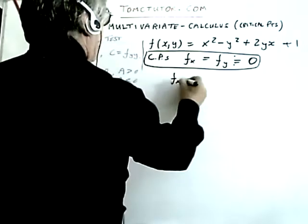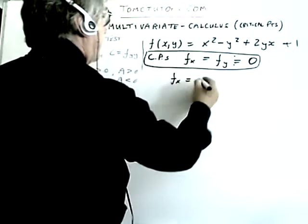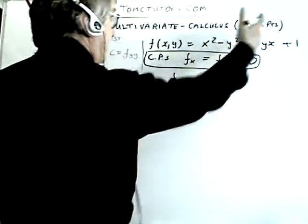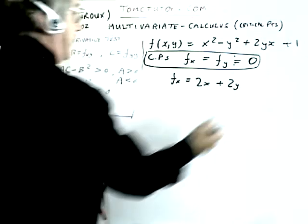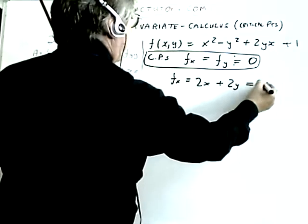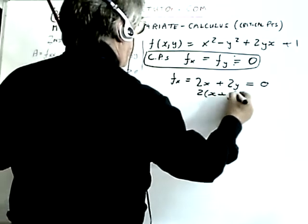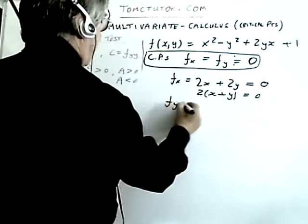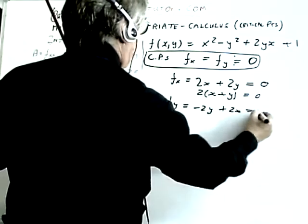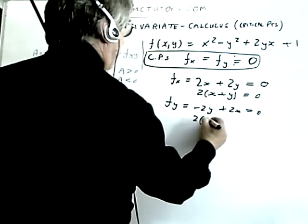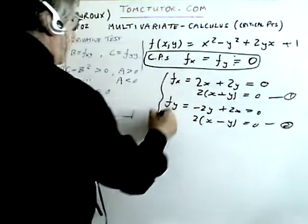Let's work out what fx is. So partial, these are partial differentials. So differentiate this function with respect to x, and I get 2x, y² is held constant, it disappears. The 2yx becomes plus 2y, and the one just disappears. So that's the partial of that function with respect to x, and that's equal to 0. Well, that's the same as 2(x + y) equals 0. Then we do fy, and fy is -2y plus 2x equals 0, or 2(x - y) equals 0. So these are two simultaneous equations that pertain to our critical point.